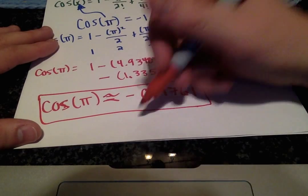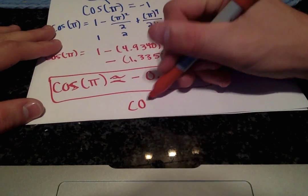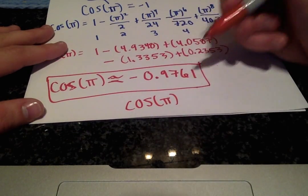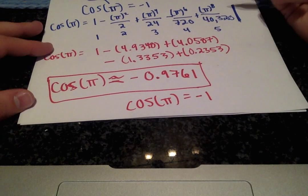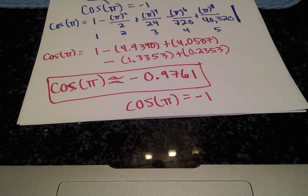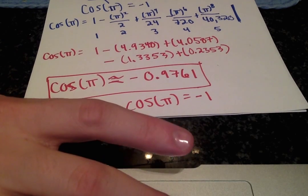And, notice that is close to our actual value, cosine of π of negative 1. So that just shows you that the Taylor series is pretty accurate, and as you increase the terms, your approximation will be more and more accurate. Thanks for watching.